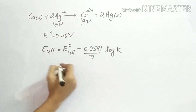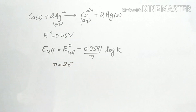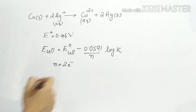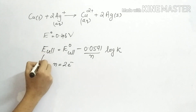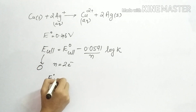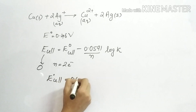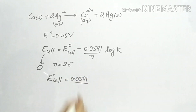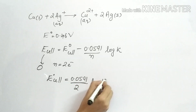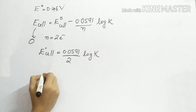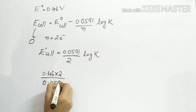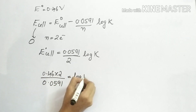What we have to do: n equals 2 electrons, because Cu going to Cu2+ involves 2 electrons, and there are 2 Ag+ with 1 charge each, so 2 electrons. N is 2. E cell is equal to 0. Then E cell equals 0.0591 divided by N.